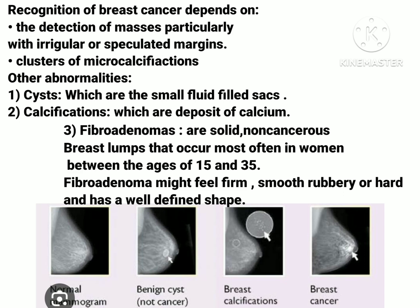There are ways to recognize breast cancer on a mammogram. It depends upon detection of masses, particularly those with irregular or spiculated margins. Next is clusters of microcalcifications — small calcium deposits that look like white spikes on a mammogram. You can check the third image showing the microcalcifications.